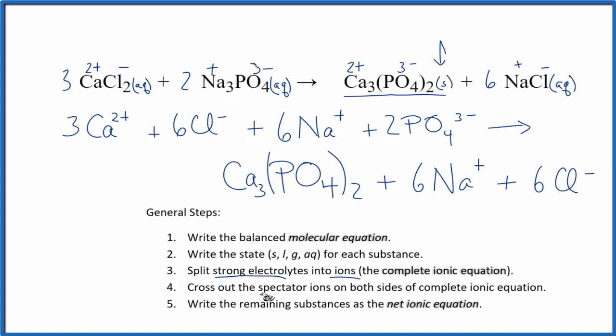Now we can cross out the spectator ions. These are the ions that appear on both sides of the equation. So if we look, we see we have Ca 2+, nope, six Cl-, that appears both in the reactants and the products. So we can cross that out.